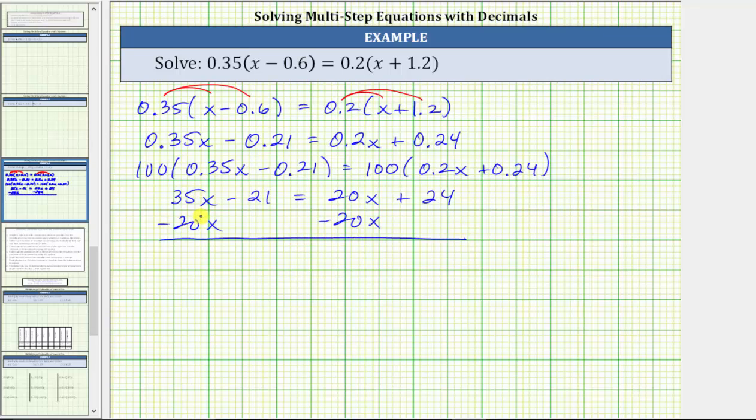Simplifying, 35x minus 20x is 15x. We have 15x minus 21 equals on the right side, 20x minus 20x is zero, which is why we subtracted 20x on both sides. The right side is now just 24.